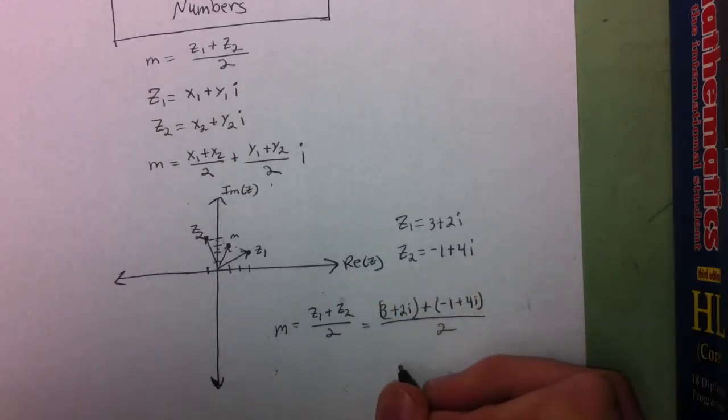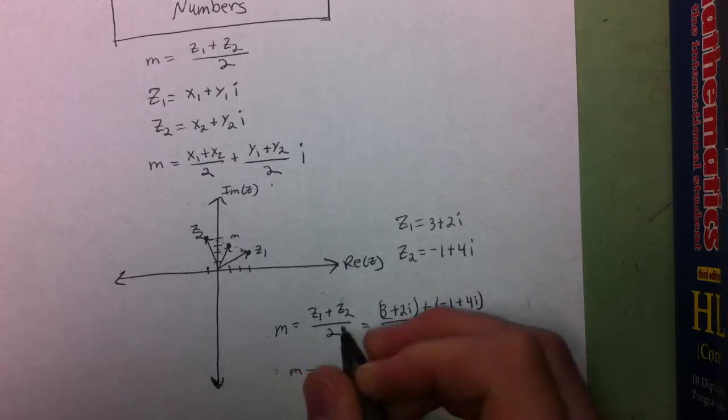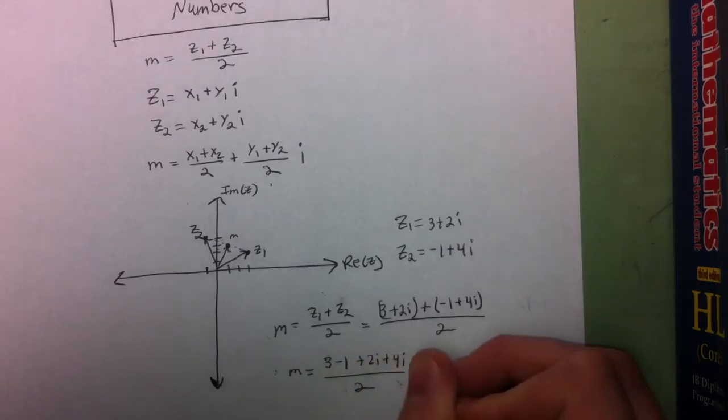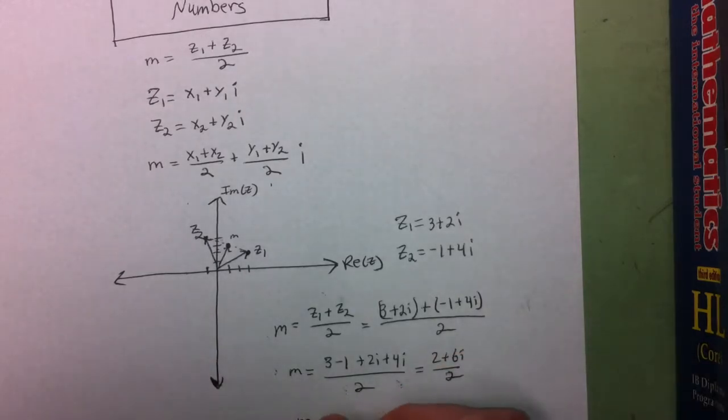That will give us 3 minus 1 plus 2i plus 4i over 2, which is 2 plus 6i over 2. So we find that the midpoint is 1 plus 3i.